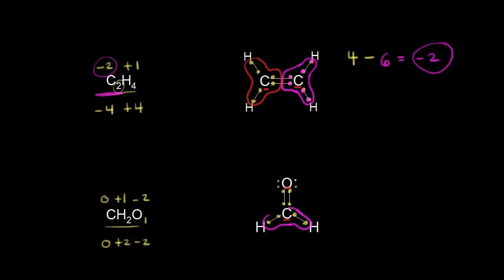Because oxygen is more electronegative, it takes all of those electrons. Carbon is then surrounded by four electrons — one, two, three, four. Carbon is supposed to have four valence electrons, and here we see it is surrounded by four once we account for electronegativity. So four minus four gives us an oxidation state of zero. In the formaldehyde molecule, carbon has an oxidation state of zero, which is what we predicted.